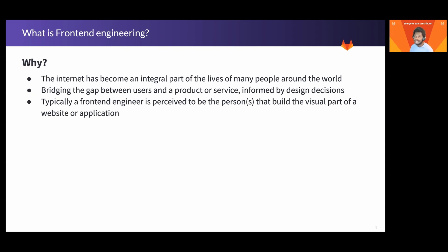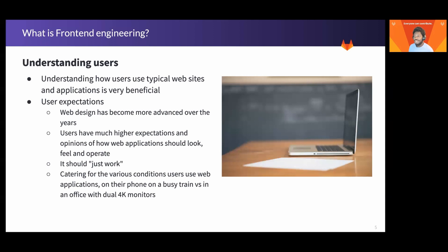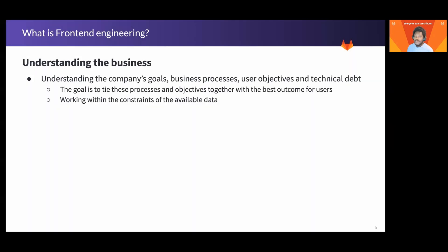This is usually informed by design decisions. Two key areas of front-end engineering are understanding how users use typical websites and applications, as well as understanding user expectations. Web design has advanced rapidly over the years, and as a result users have much higher expectations and opinions of how web applications should look, feel, and operate. Another important aspect is understanding not only the company's goals and business processes, but also the user objectives for whatever application or website they're using. This is often balanced against technical debt and any other external constraints imposed on the system.